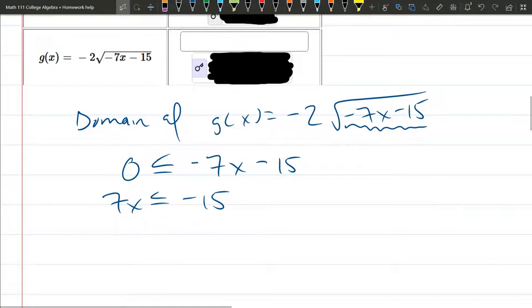We have this and then I need to get the 7 away from the x here, so it's 7 times x, so we multiply by 1/7. You could also divide by 7, it's the same thing.